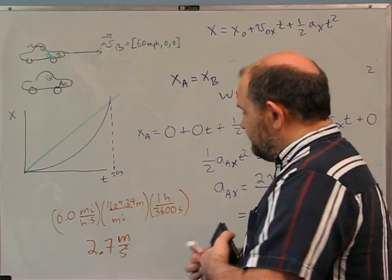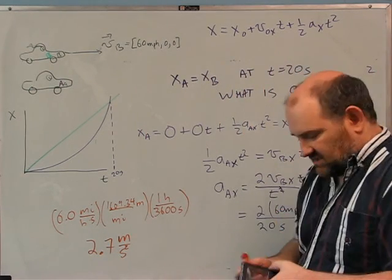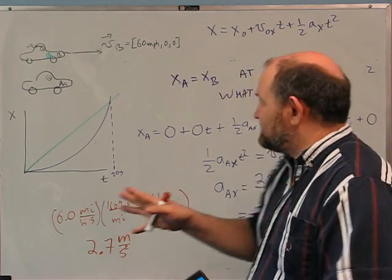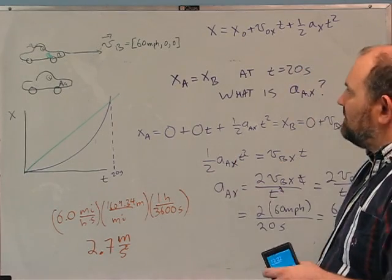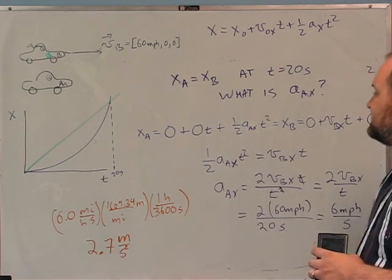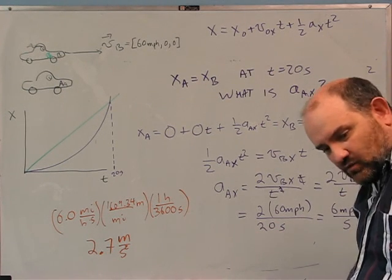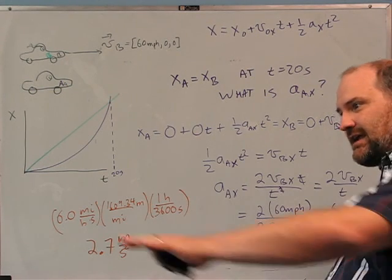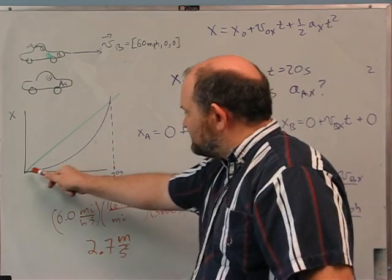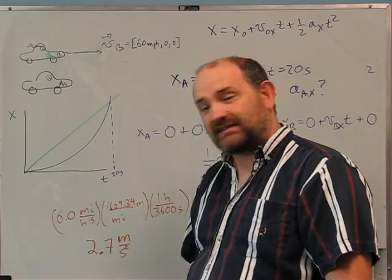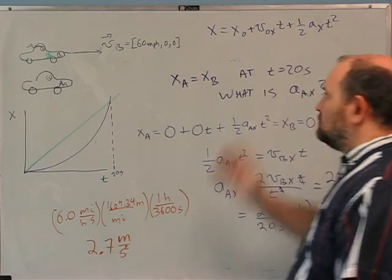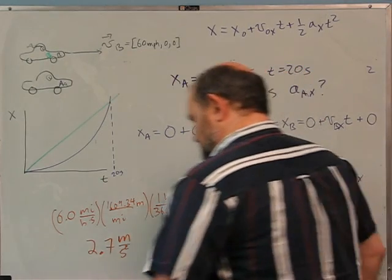That's an appreciable acceleration — a little more than a quarter of 1 g. So I'm really peeling out. That's what I need to accelerate in order to catch up with that car. He blows by me, I start accelerating, and by 20 seconds I've caught up — but by then I'm going twice as fast. That's the fourth problem.